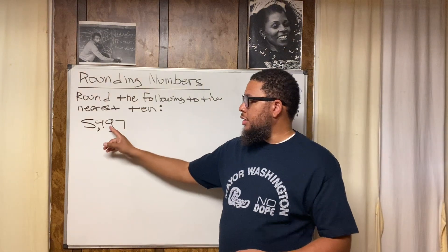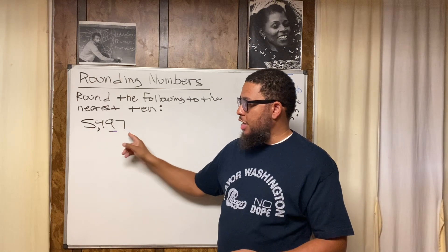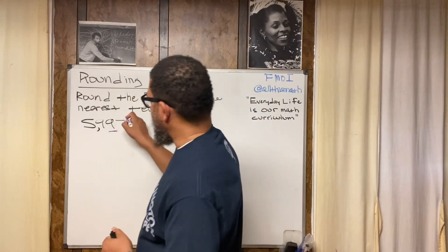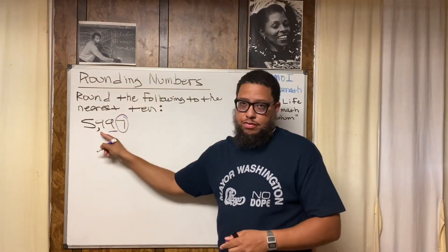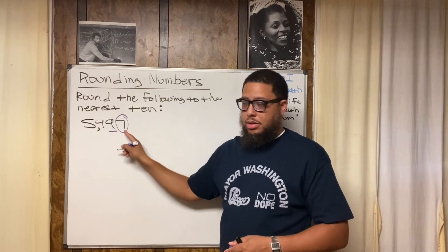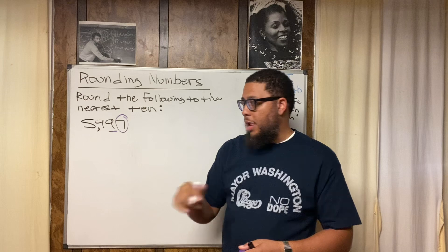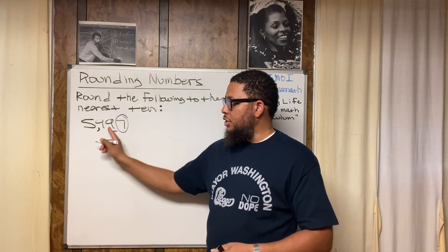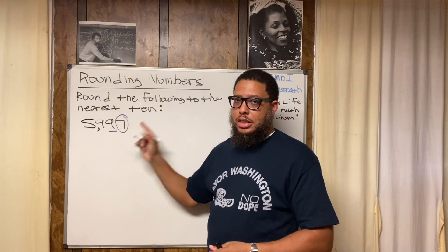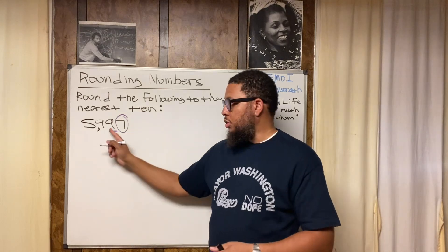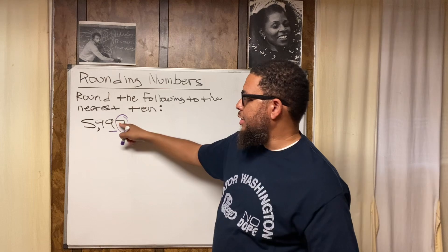We look at the digit to the right of the place we're rounding to, which is seven. Seven is the next-door neighbor to the right — not to the left, always to the right. Write that down and memorize it. When you're rounding, the digit to the right of the place you're rounding to is always the digit that determines what you do with this nine.